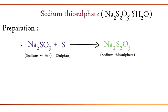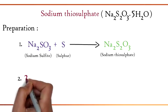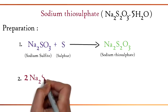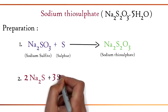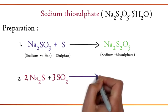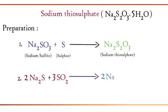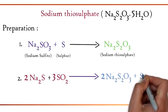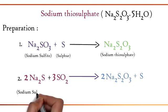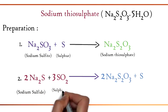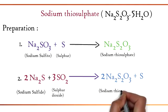It can also be prepared by reacting sodium sulfide with sulfur dioxide. The equation is 2Na2S + 3SO2 → 2Na2S2O3 + S. Two molecules of sodium sulfide react with sulfur dioxide to give sodium thiosulfate.